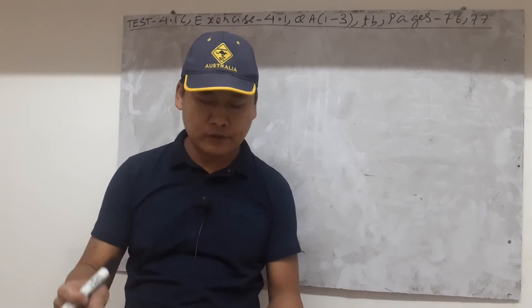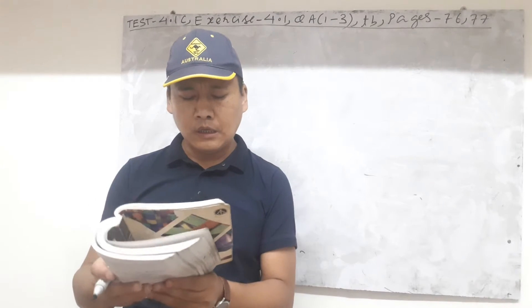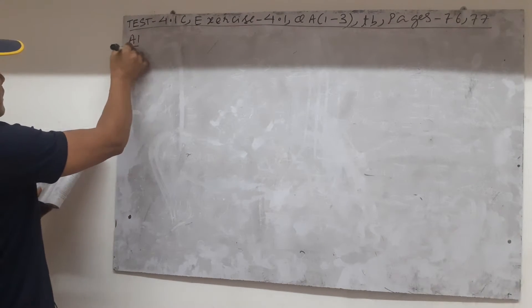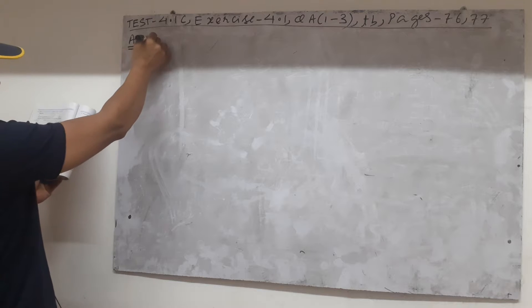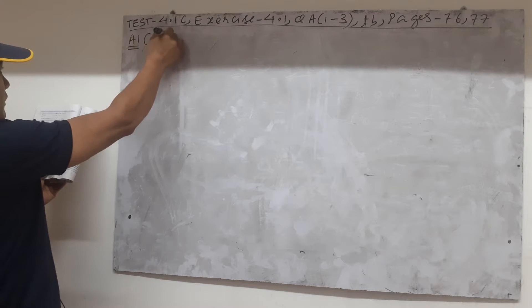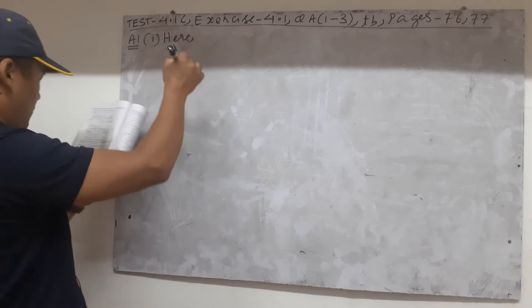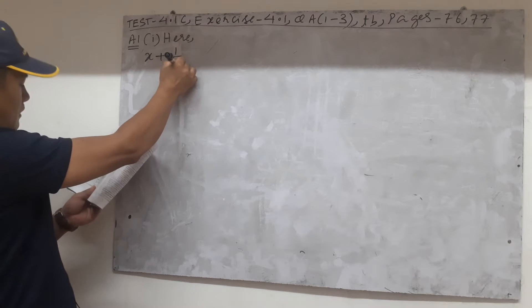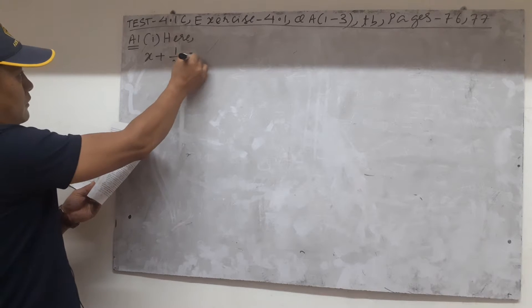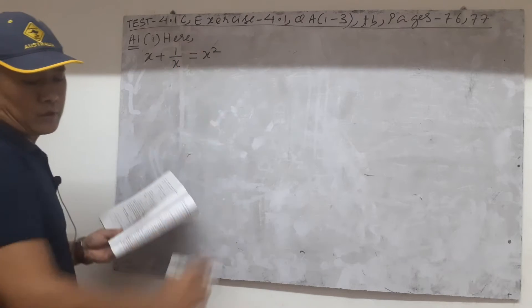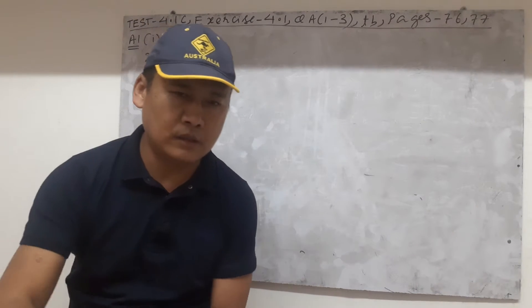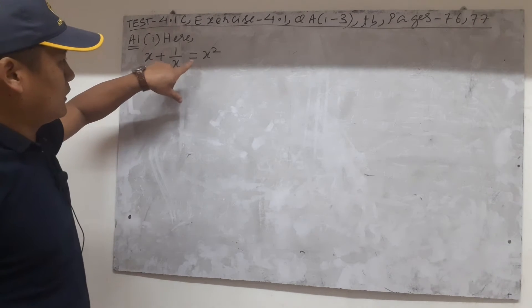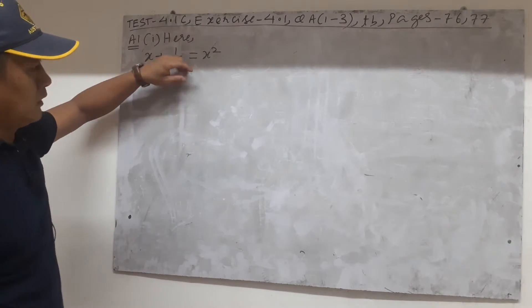I'll read the first question: which of the following is a quadratic equation? So for A1, we take the first one and test — there's no other way. We are given x plus 1/x is equal to x squared. As given in the question, we cannot really tell whether this is a quadratic equation or not unless we simplify it.